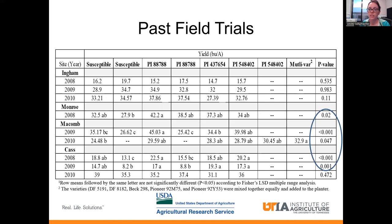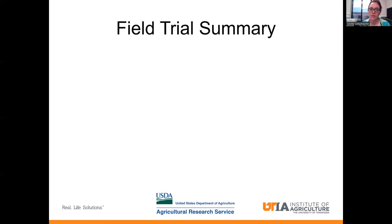I want to draw your attention specifically to this value — looking up in the column, it says 'multivar.' That means that in that particular treatment, we combined all of the different sources of resistance together in the planter. And that gave us our greatest yield, which compared to the other treatments was our significantly greatest yield.